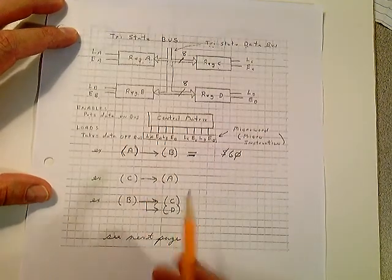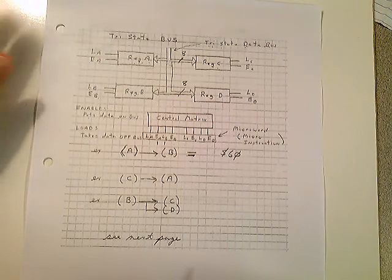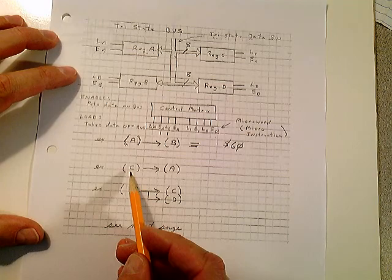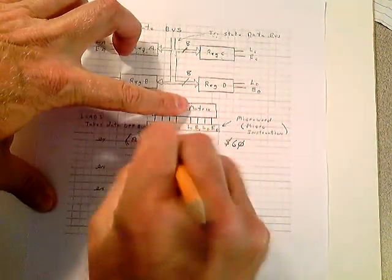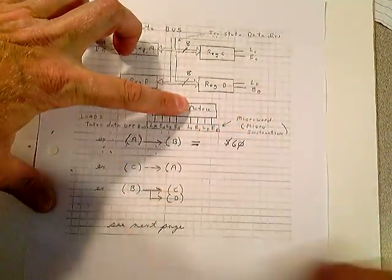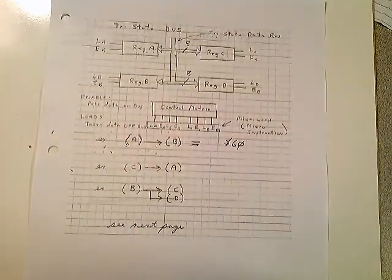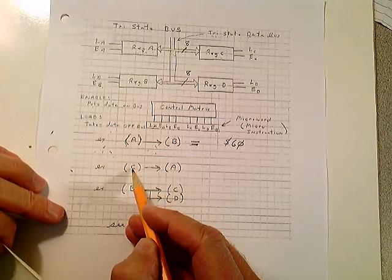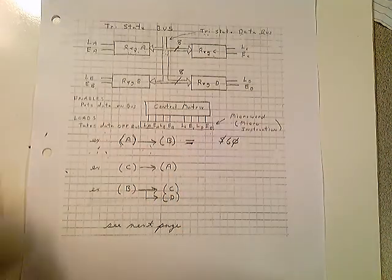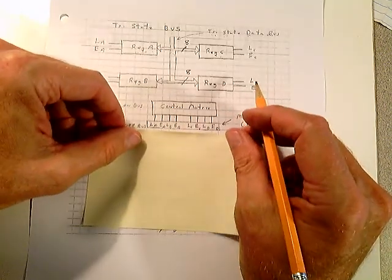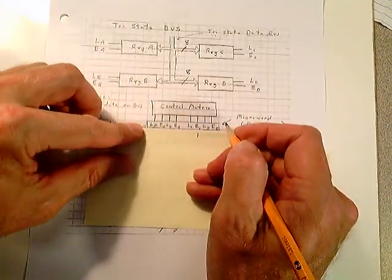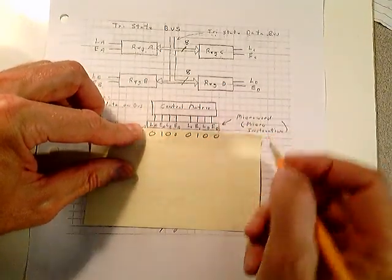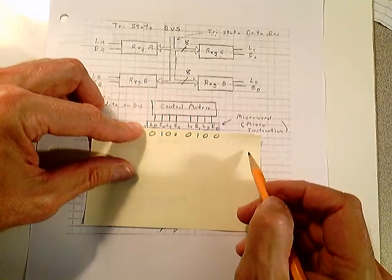See if you can do this one. See if you can do this one. On your own. Try to do it on your own. Here I want to take the contents of... Let's do this. I want to take the contents of C. So I want to enable C out onto the bus and I want to load it in A. So I want to enable C. And I want to load it in A. The rest are all 0. What is that? That's a 44.